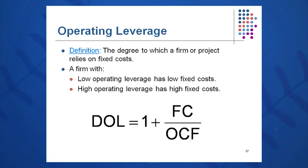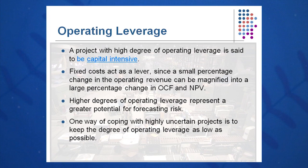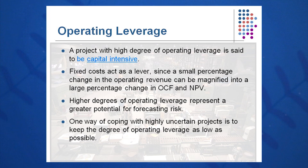The formula for it is one plus fixed cost over OCF. So if we are capital intensive — let's say a chemical plant that has lots of metal, lots of machinery, lots of equipment — we're going to have a high degree of operating leverage and a high degree of fixed costs. Fixed costs act as a lever, so they can magnify gains and losses and turn a small percentage change in sales to a large percentage change in OCF and NPV. A high DOL is essentially a company that has lots of capital equipment.